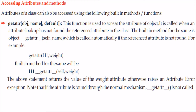Now we will look at how to access the attributes and methods of a class using certain built-in methods. The first built-in method we are going to see is `getattr`, where we pass an object and the attribute name. This function is used to access the attribute of the object. It is called when an attribute lookup has not found the referenced attribute in the class — then it will go to `__getattr__`.